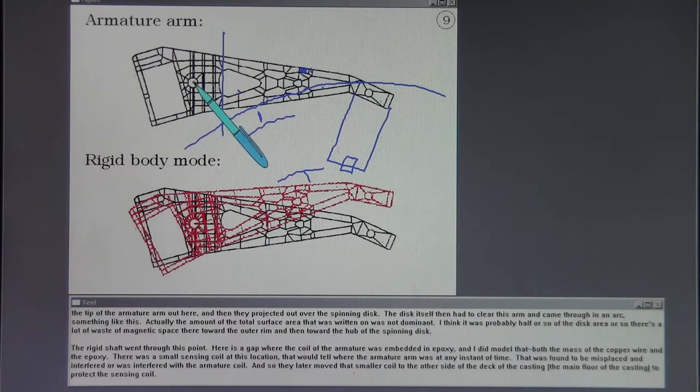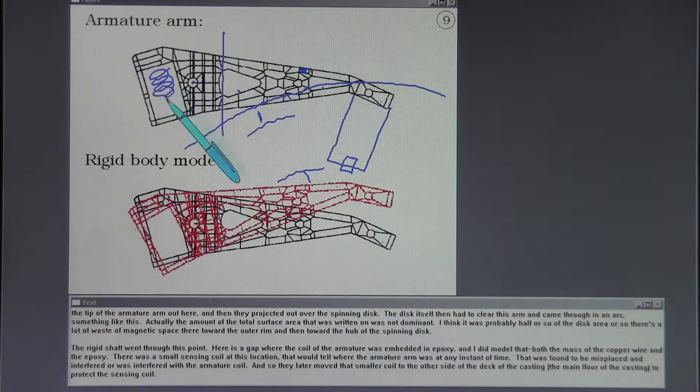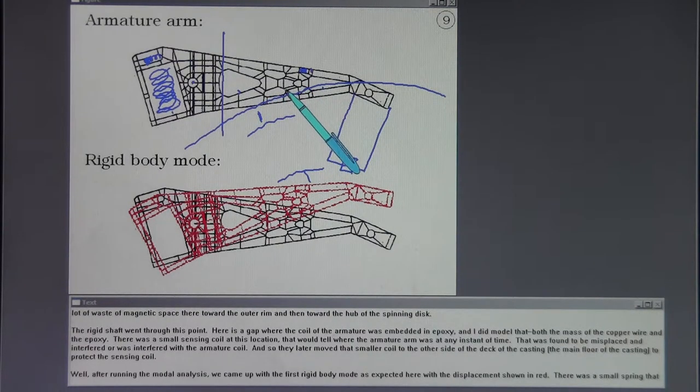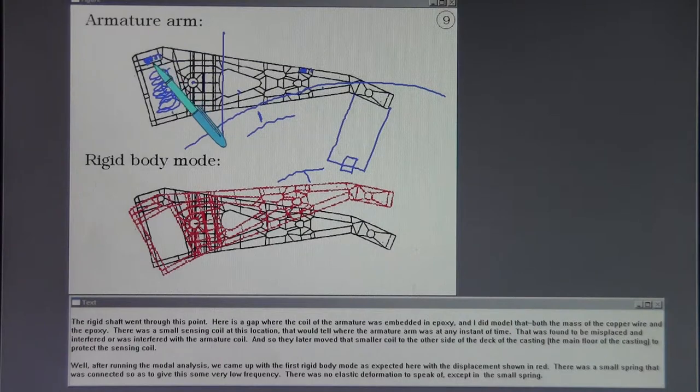The rigid shaft went through this point. Here is a gap where the coil of the armature was embedded in epoxy, and I did model that both the mass of the copper wire and the epoxy. There was a small sensing coil at this location that would tell where the armature arm was at any instant of time. That was found to be misplaced and interfered with the armature coil. And so they later moved that smaller coil to the other side of the deck of the casting, the main floor of the casting to protect the sensing coil.